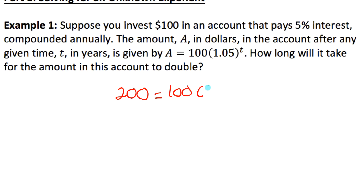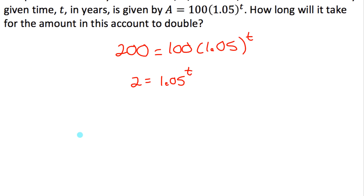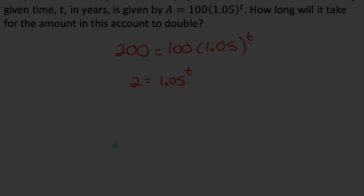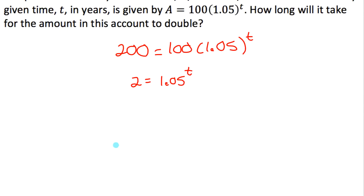There are a few different ways to solve this equation. I'm going to use the power law of logs. First, I would divide both sides by 100 to get 2 equals 1.05 to the power of t. When the unknown is in the exponent, there are a few ways to solve this: guessing and checking, rewriting in logarithmic form, or using the power law of logarithms. I'm going to take the log of both sides.